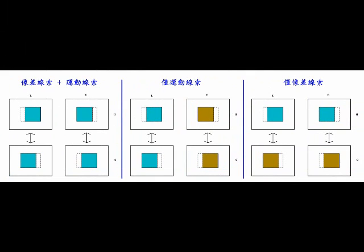The left one contains both disparity and motion cues. The middle one is two choreograms jumping back and forth. No disparity.